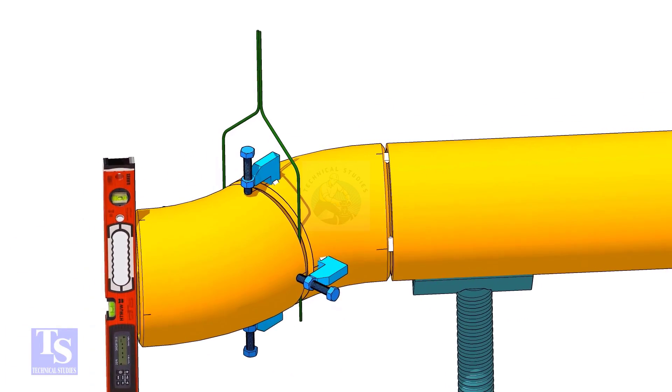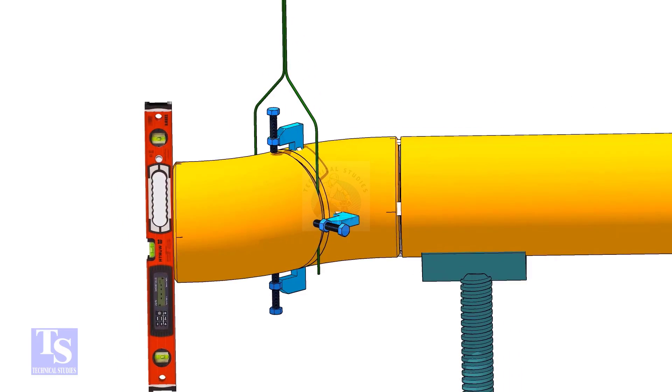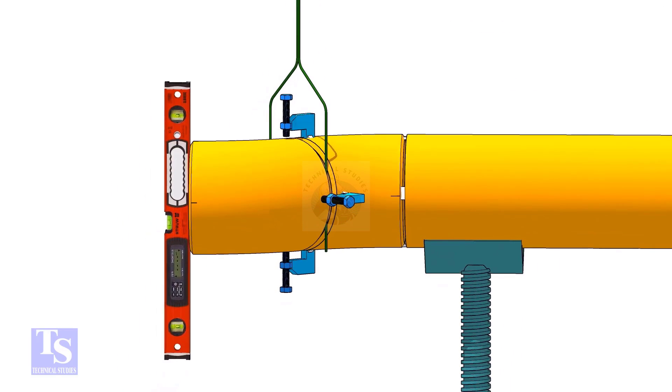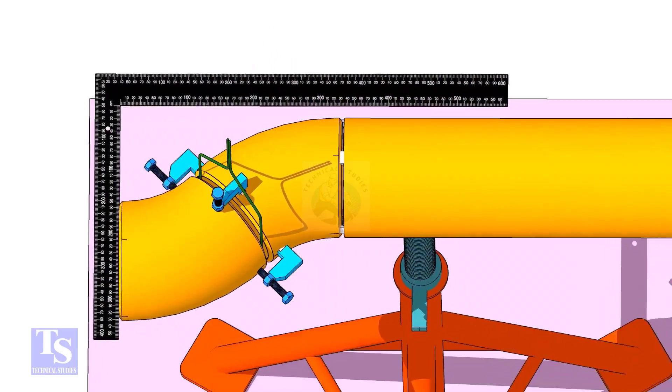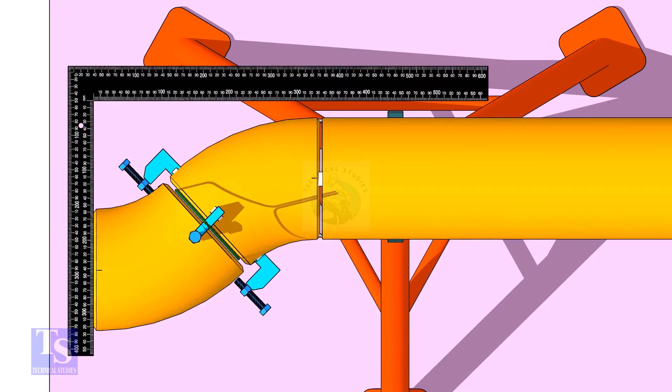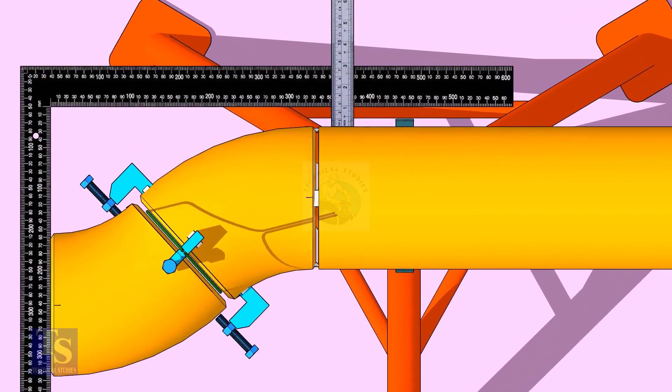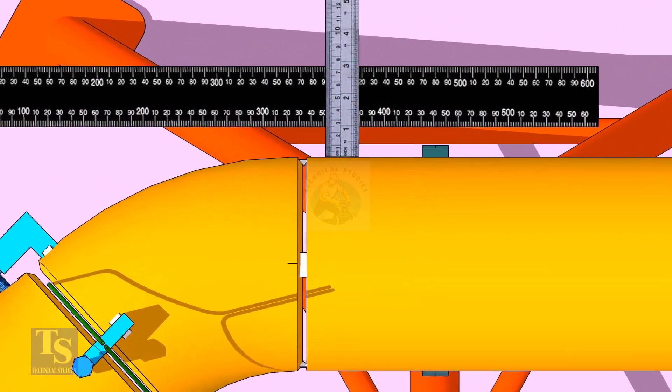Check if the face is level. Put a large right angle on the face of the elbow as shown and check the distance between the pipe and the right angle.